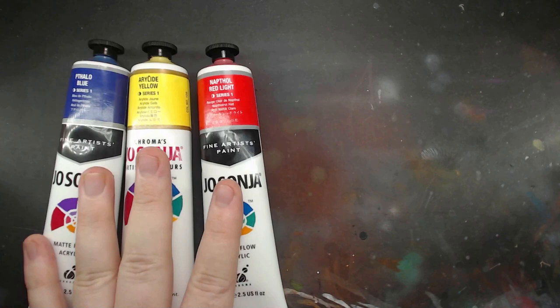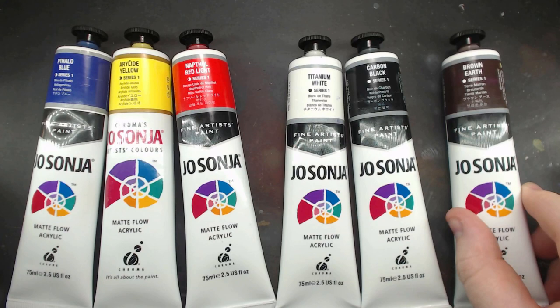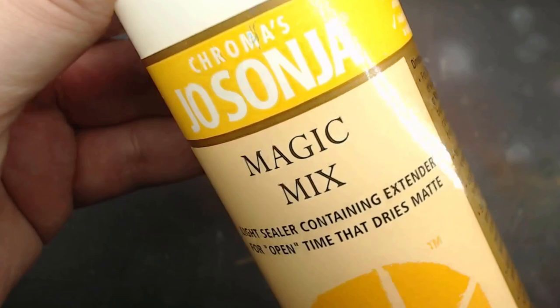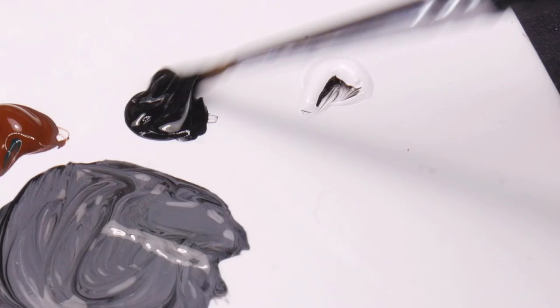They've given me 6 colors to work with. The primaries, white and black, and a brown, which is nice since browns are pretty difficult still with just the primaries. Also their magic medium, which I'll get to later, and some brush soap and conditioner.